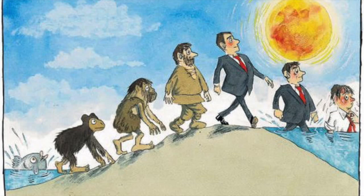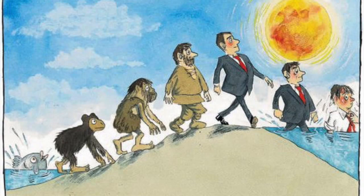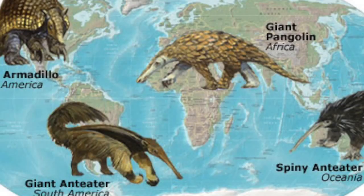Two important terms to remember in geographic distribution are microevolution and macroevolution. Microevolution is a smaller-scale measure of any change in the population, such as change in frequency of alleles resulting from genetic drift, gene flow, natural selection, or mutation. Macroevolution refers to evolutionary change at or above the species level — a totally new species may form, or a species can change into another species over time.